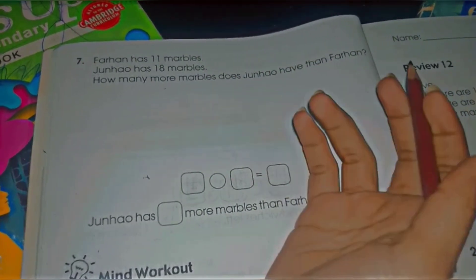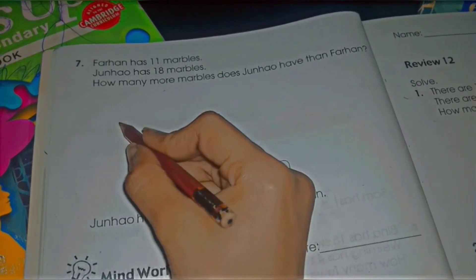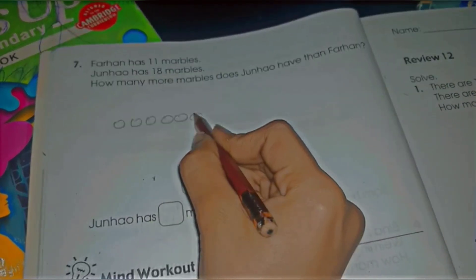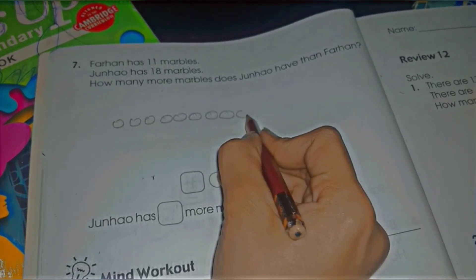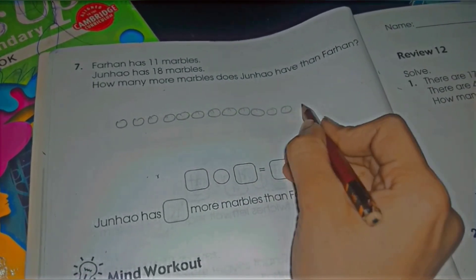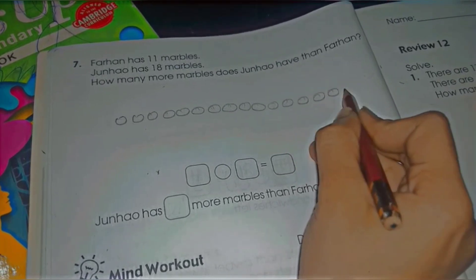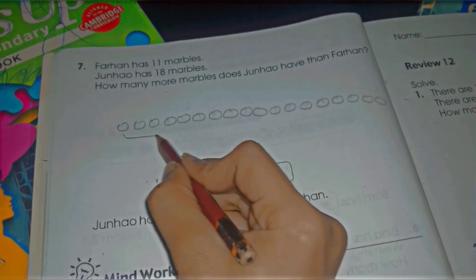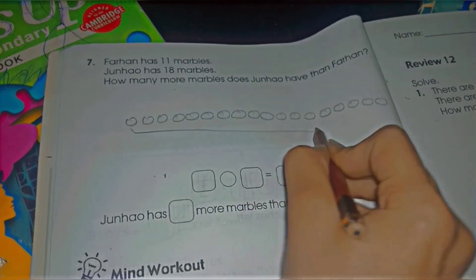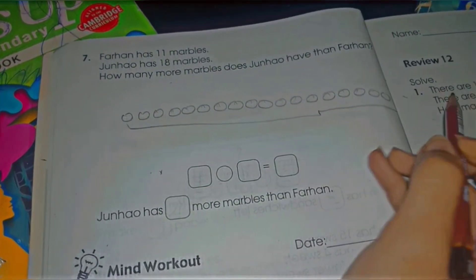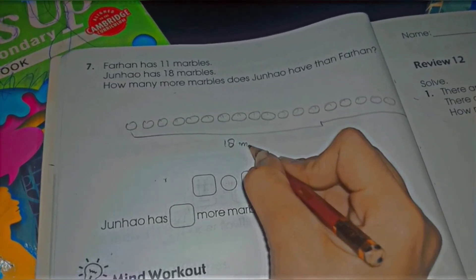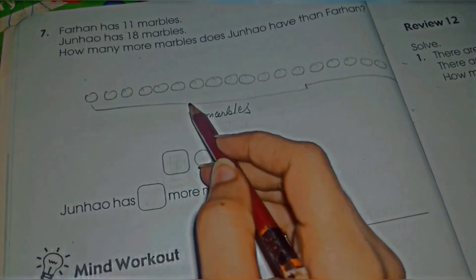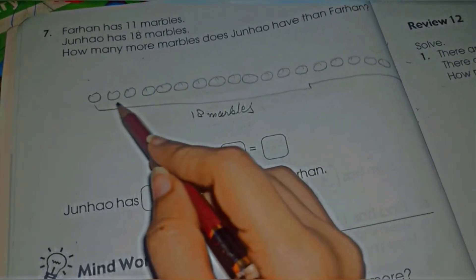Let's consider an example. We can assume that these are the marbles: 1, 2, 3, 4, 5, 6, 7, 8, 9, 10, 11, 12, 13, 14, 15, 16, 17, 18. So these are the 18 marbles, right? You can see here Janao has 18 marbles.